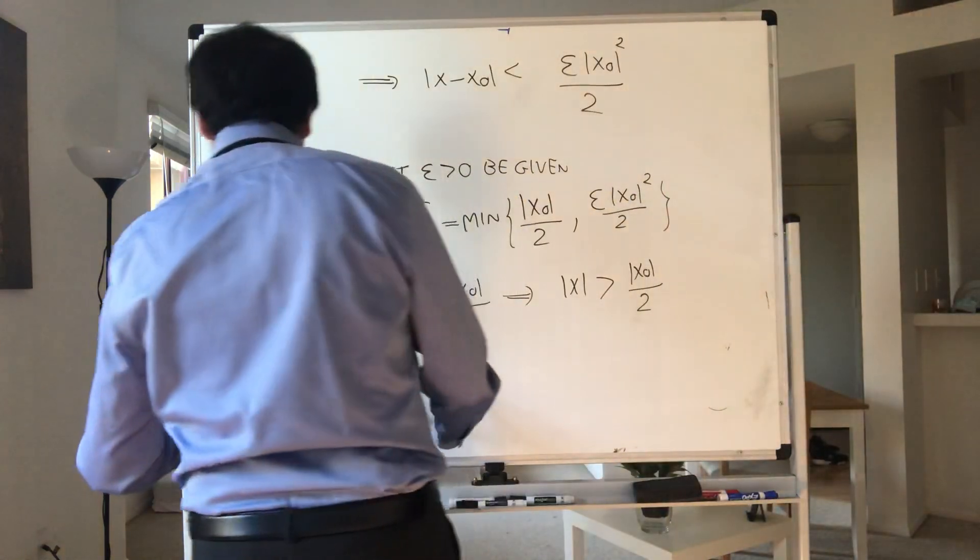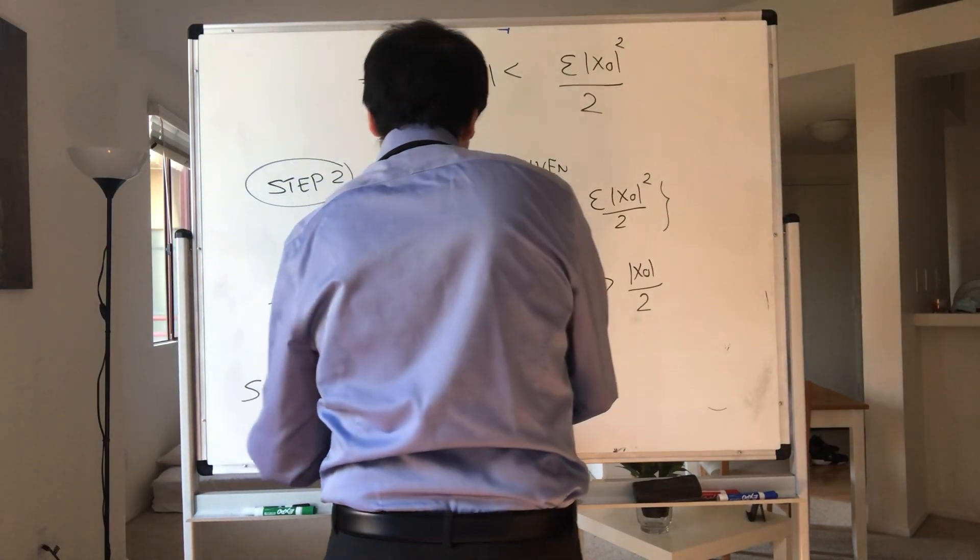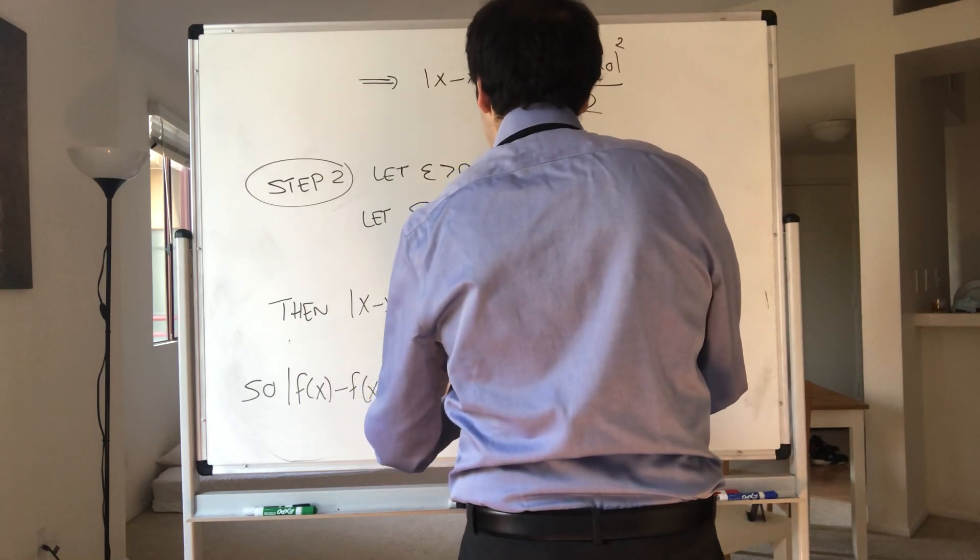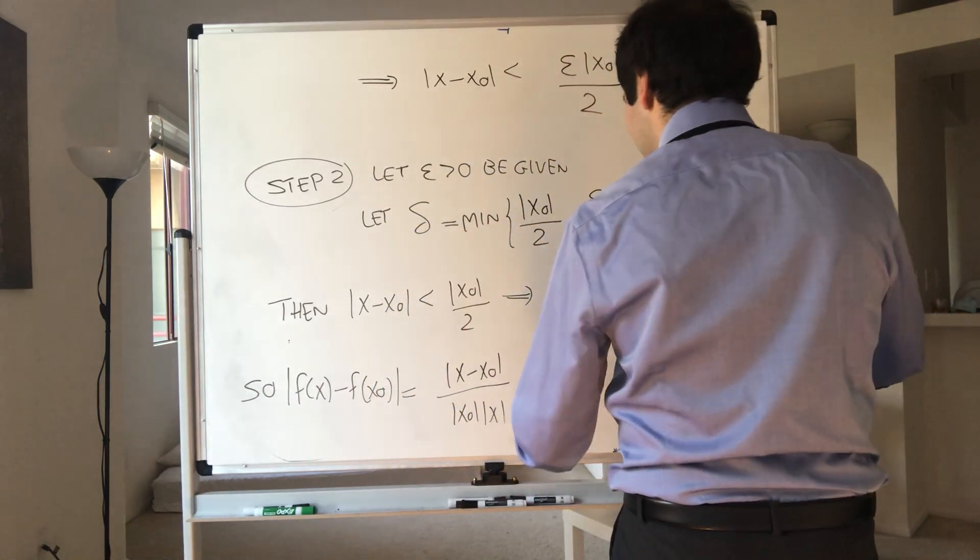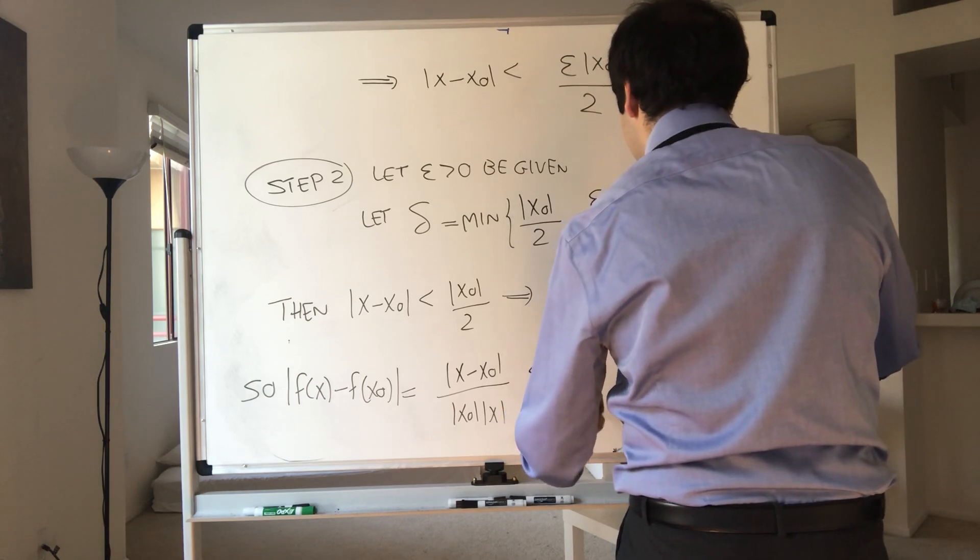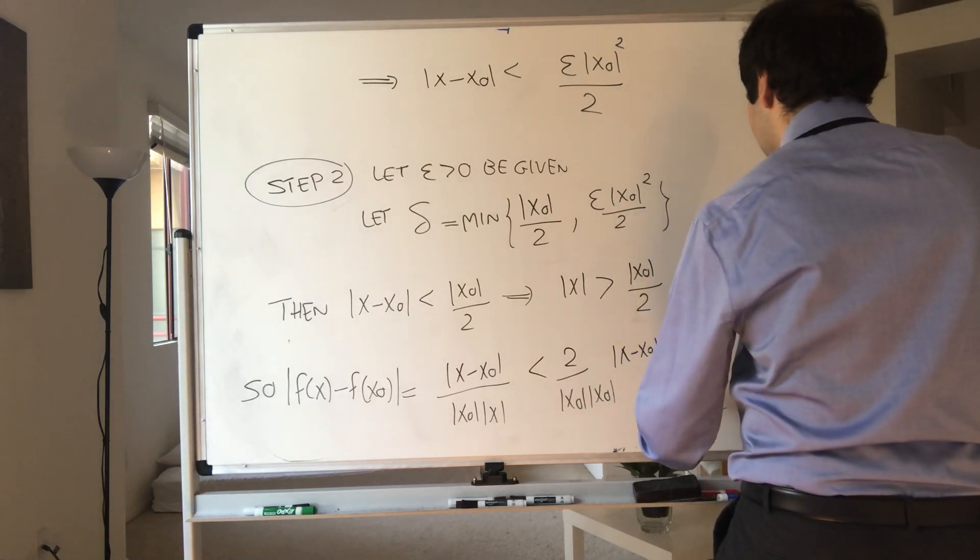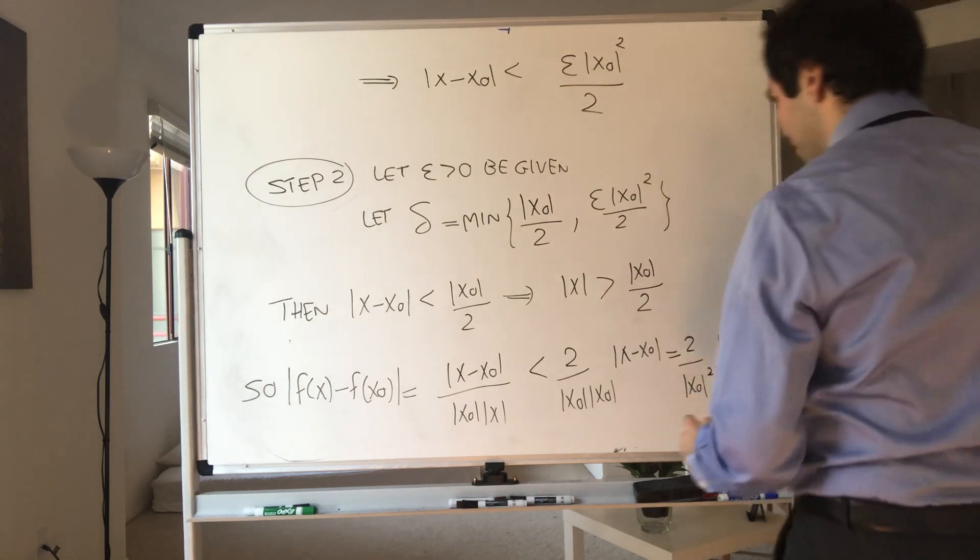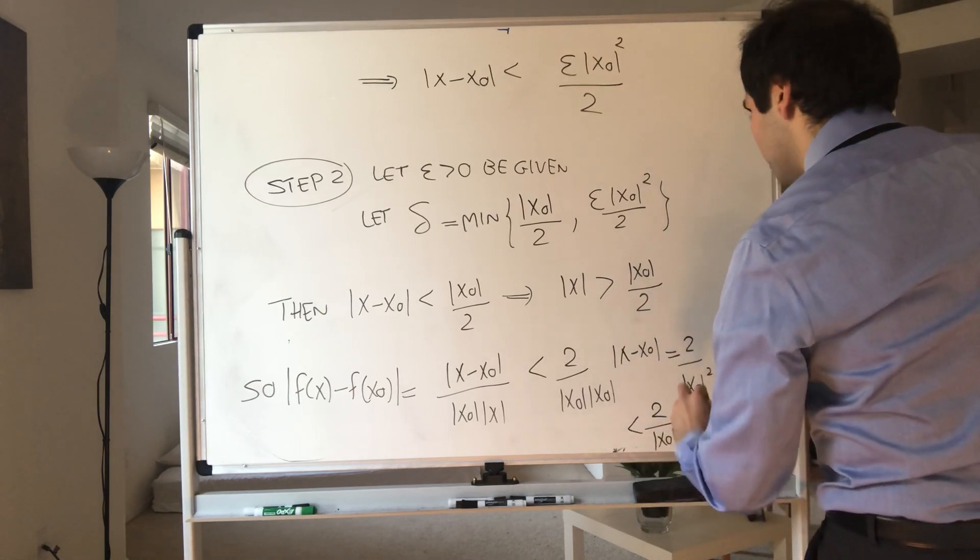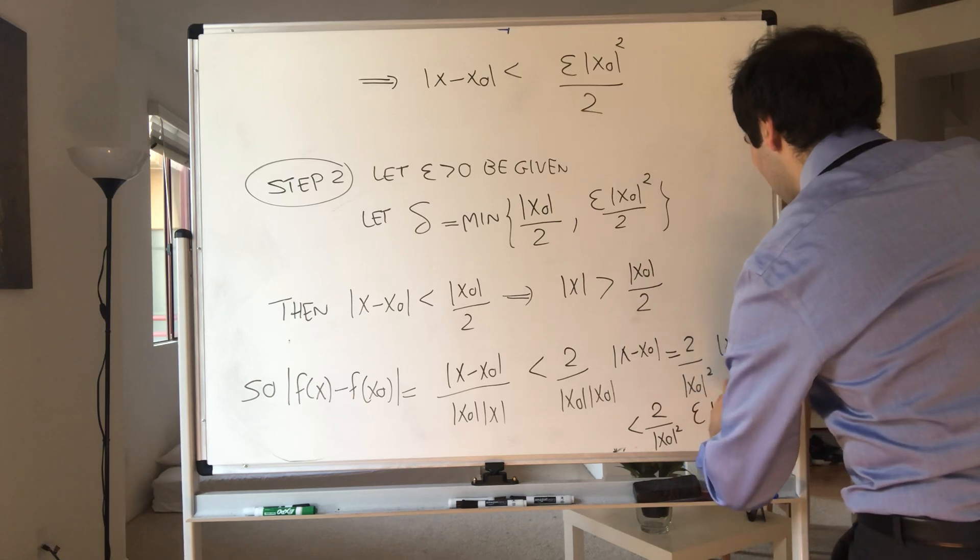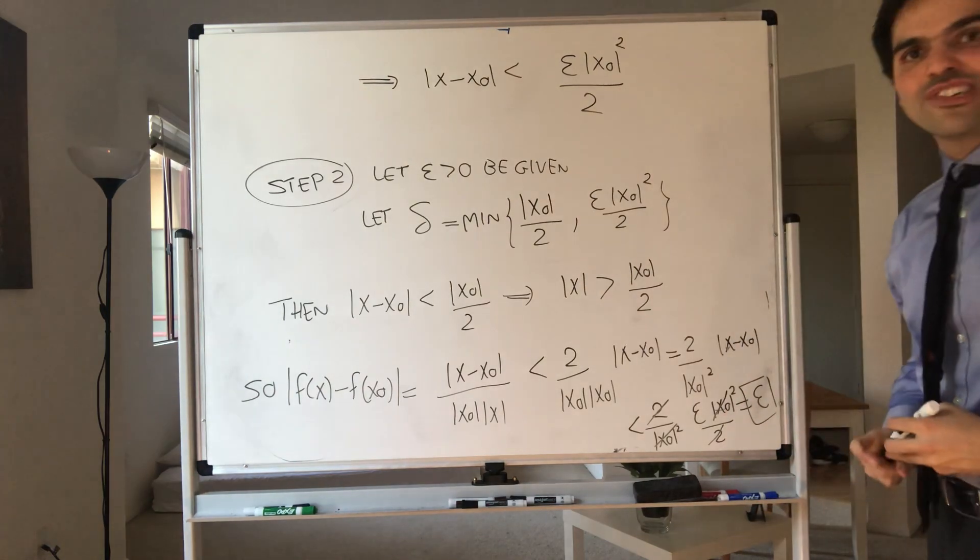And then, on the other hand, we get that f(x) minus f(x naught). Again, we simplify that to be x minus x naught over x naught x. And now this becomes less than 2 over x naught times x naught times x minus x naught. And that's 2 over x naught squared times x minus x naught. But then that becomes strictly less than 2 over x naught squared times epsilon x naught squared over 2. And now all this cancels out. And at the end, we have our satisfactory epsilon.